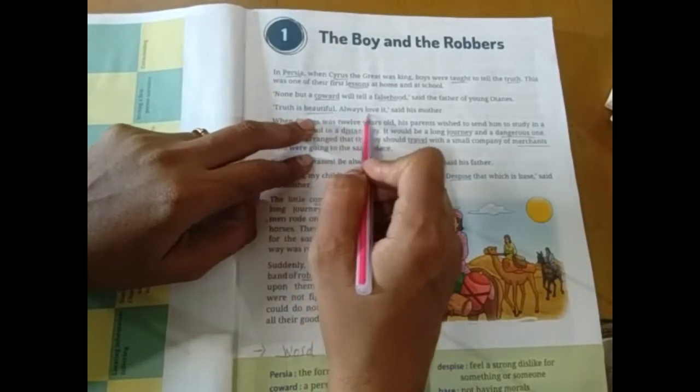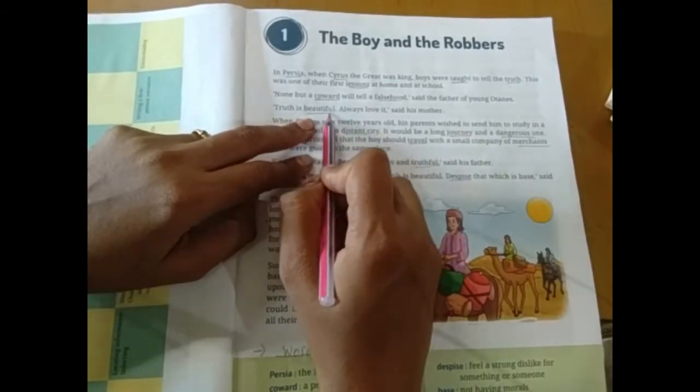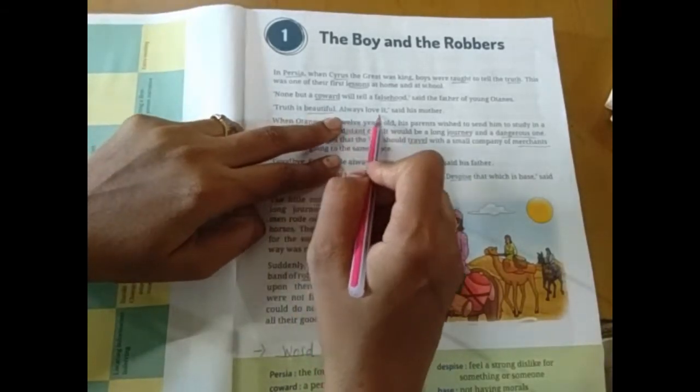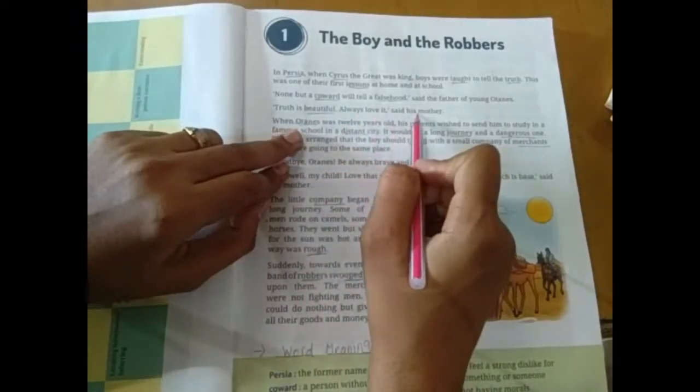None, but a coward will tell a falsehood, said the father of the young Hortense. Chho Hortense tha hai, uske father kya kya kya tha? Chho darpok hoota hai, woh hi hamesha chute bolta hai. Woh korn bolta tha? Uske father. Truth is beautiful, always love it. Uske mother kya kaha.